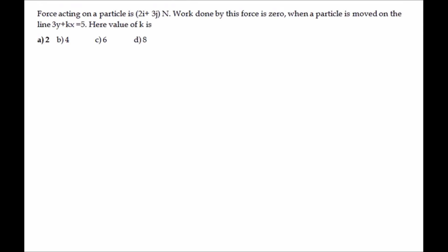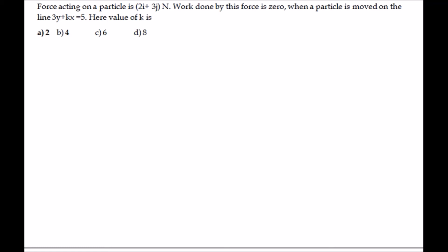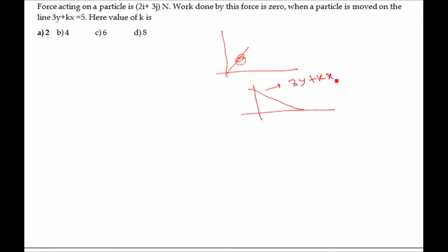The next problem: the force acting on a particle is 2i + 3j newton, and the work done by this force is 0 when the particle moves on the line 3y + kx = 5. Find the value of k. The particle moves along this line whose equation is 3y + kx = 5.